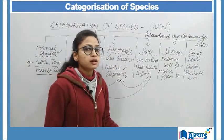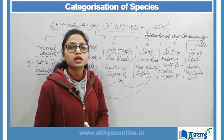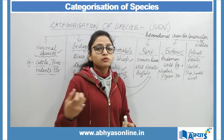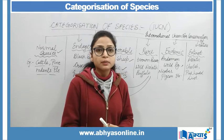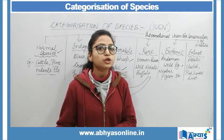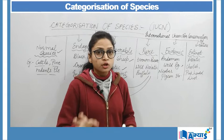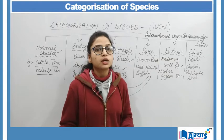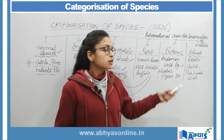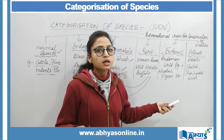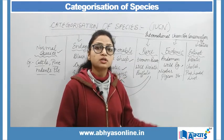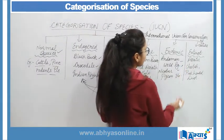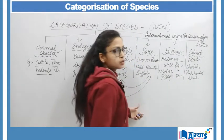Endemic category के अंदर जो भी species आती हैं वो ऐसी होती हैं जो किसी particular area पर ही पाई जाती हैं due to the geographical requirements। जैसे बर्फीले भालू बहुत ज्यादा बर्फवाले places पर ही रह सकते हैं, अगर उन्हें कहीं और रख दो तो वो survive नहीं कर सकते। इनके साथ भी same situation है — यह भी decrease होना start हो गई हैं। इसके examples हैं Andaman wild pig, Nicobar pigeon, etc.